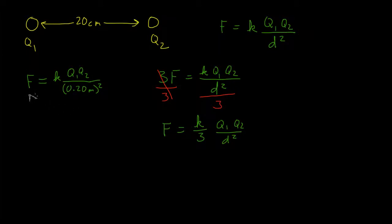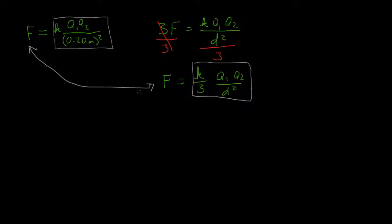So I know that the F's in these equations are equal. So that means that what these F's equal must also be equal. So what we have is K Q1 Q2 divided by 0.20 meters squared, that's this equation, must equal this equation, K over 3 Q1 Q2 divided by D squared.